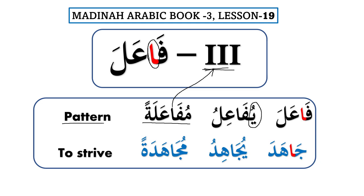The example we are going to follow in this lesson is: جَاهَدَ يُجَاهِدُ مُجَاهَدَةً — meaning 'to strive'. So جاهد يجاهد مجاهدةً is our Form 3 example for this lesson.